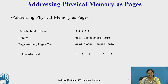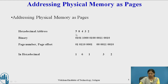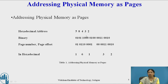We will consider a hexadecimal address of physical memory: 58432. To represent it as a page, we will first convert this hexadecimal address into binary. For that, we will write the binary representation of each digit as shown here.